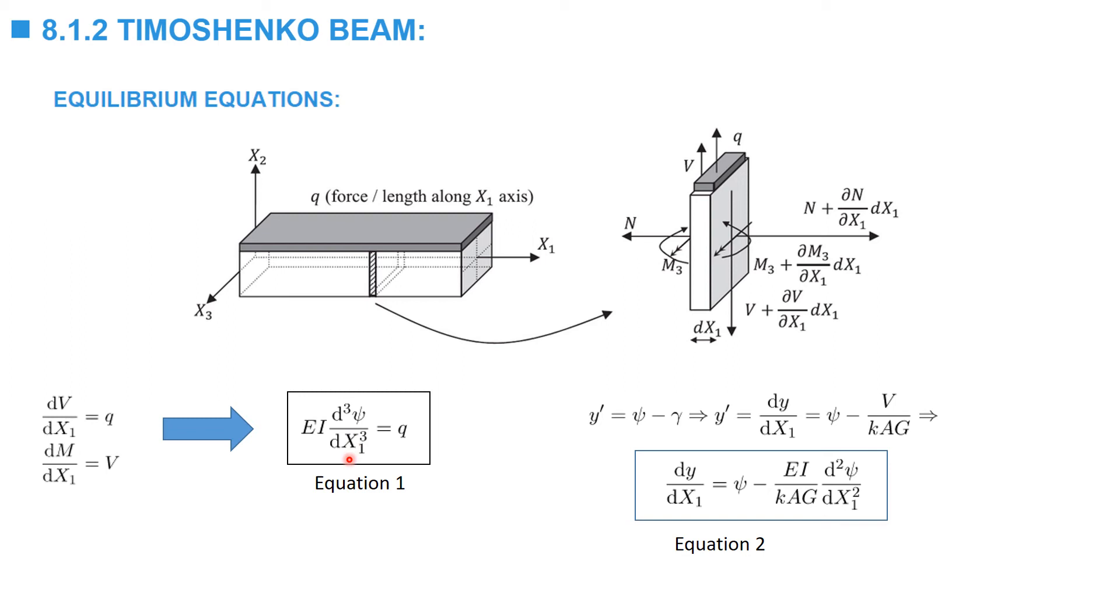We have two deformation parameters, psi and Y, so we need another equation. The second equation is the relationship between Y and psi. We know that Y prime is equal to psi minus gamma. We know Y prime is dy by dx1, and gamma is equal to the shear divided by this factor K multiplied by A multiplied by G. We can also replace V with its function in psi. And we end up with the second equation that relates Y prime with psi. So we have those two equations that would allow us to solve for psi and Y, given some boundary conditions.